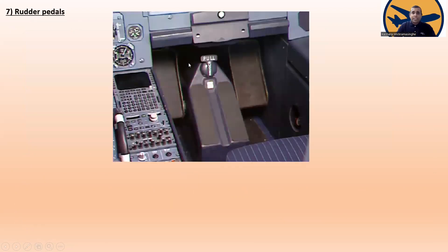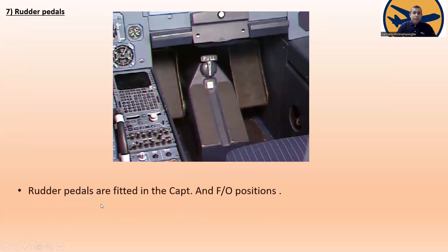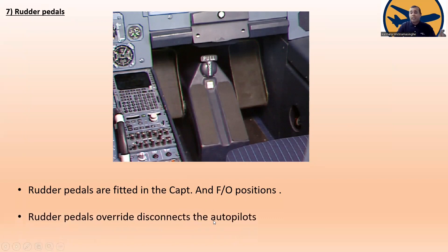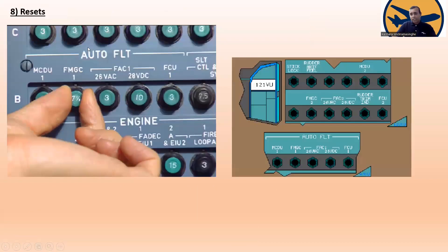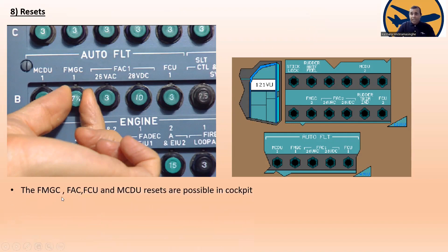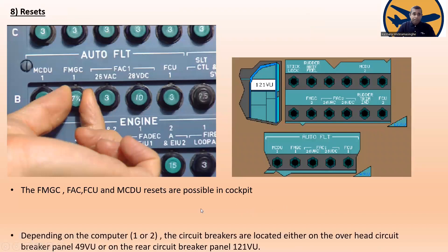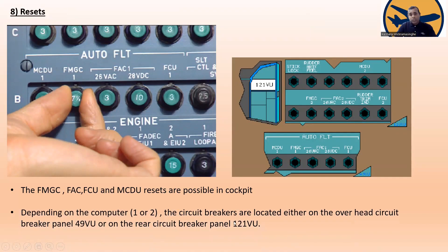Here are the rudder pedals. The rudder pedals are fitted in the captain and first officer positions, and the rudder pedals override disconnects the autopilot. For resets, these are normally done at the circuit breaker panels. The flight management guidance computer, FACS, FCU, and MCDU resets are possible in the cockpit. Depending on computer 1 or 2, the circuit breakers are located either on the overhead circuit breaker panel (49BU) or on the rear circuit breaker panel (121VU).